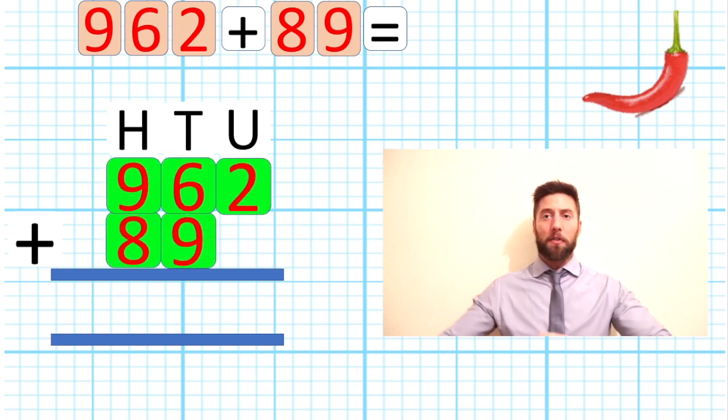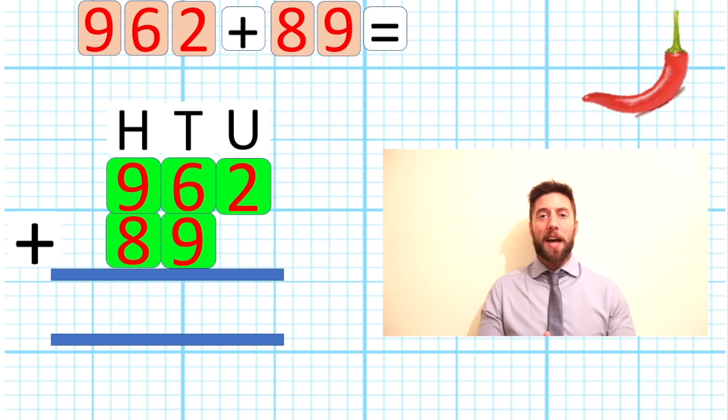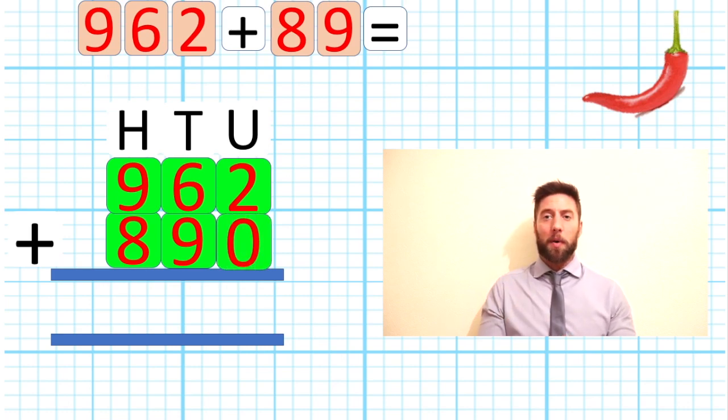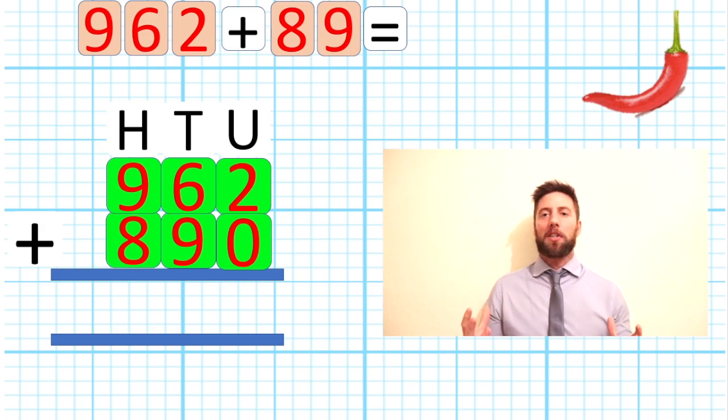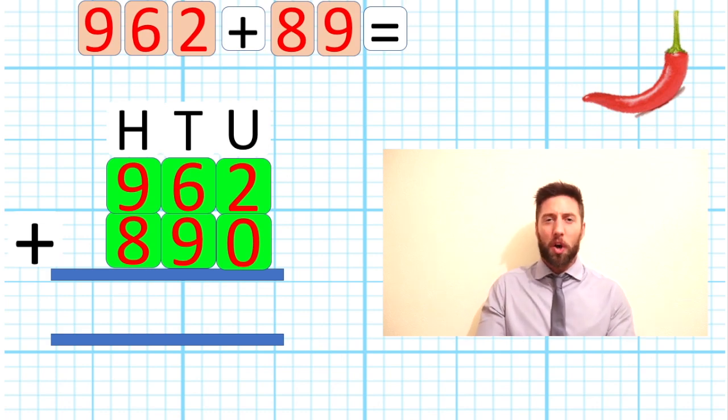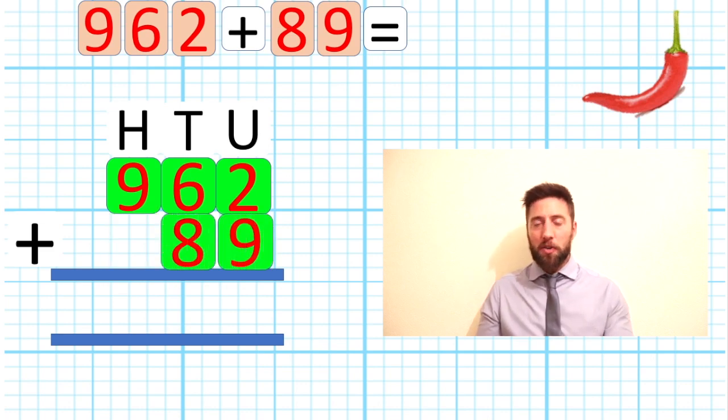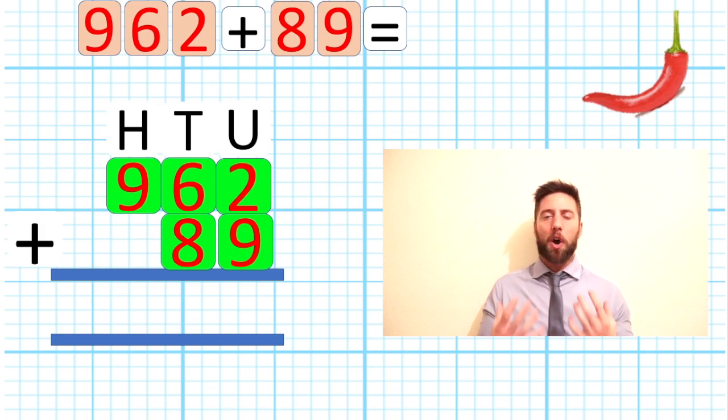You are going to get sick of me saying place value, but it is very, very important. So we need to understand what the value of these numbers are and where to put them. If I was to put my numbers over here and line them up like this, I have changed the whole value of our 89. I have actually turned our number - using our placeholder here to represent where we've left a gap - we've turned it into 890. We've completely changed the question, so we are obviously going to get the wrong answer.